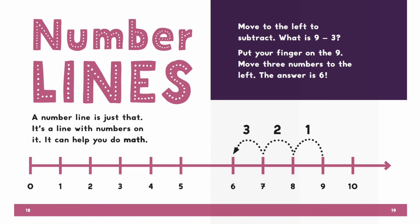Number lines. A number line is just that. It's a line with numbers on it. It can help you do math. Move to the left to subtract. What is 9 minus 3? Put your finger on the 9. Move 3 numbers to the left. The answer is 6.